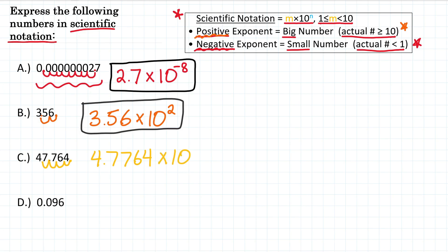And then times 10 to the what power? Well, we moved it 1, 2, 3, 4 places. So it is to the fourth power. Alright, so for C, 47,764 is the same as 4.7764 times 10 to the fourth power.